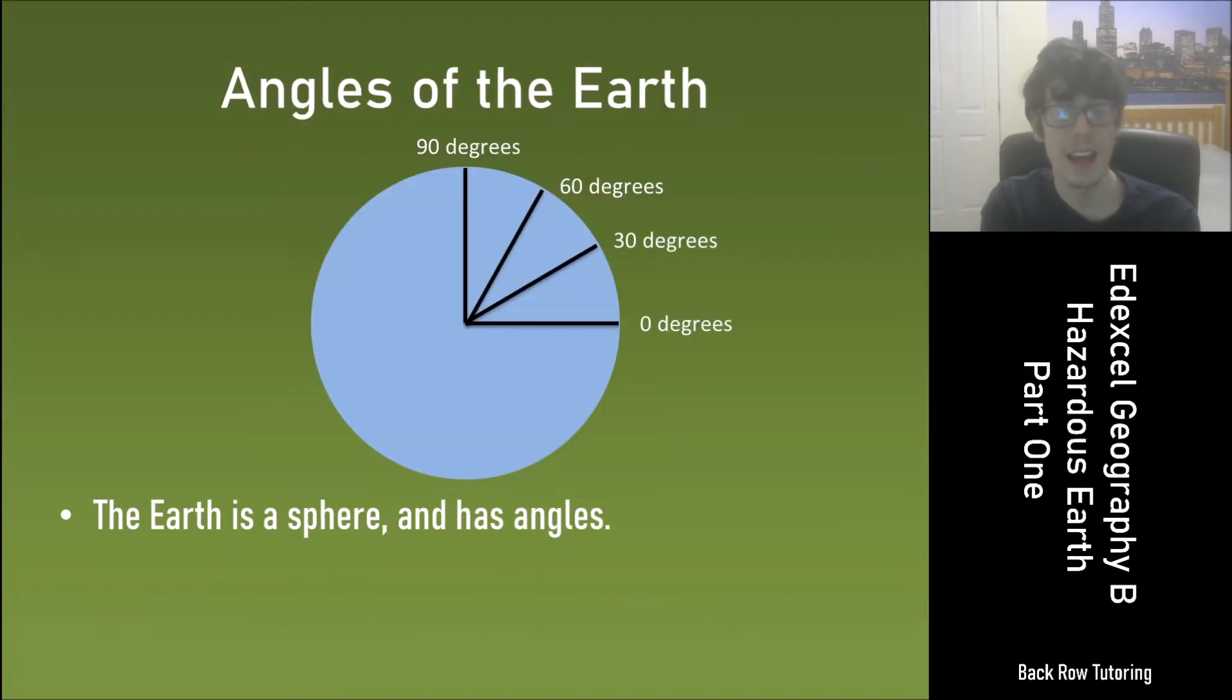Now the Earth is a sphere and it has angles. 0 degrees at the equator, 30 degrees, 60 degrees and 90 degrees at the poles.